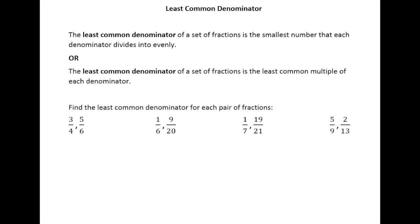Just to give you an idea of why we care about this idea of a least common denominator — when we get to adding and subtracting fractions, we're going to need all of our denominators, all the bottom numbers of our fractions, to be the same. The least common denominator is what we're going to make all of the denominators turn into when adding or subtracting. We'll see exactly how that plays out in the next section. For now, we'll just work on finding the least common denominator for pairs of fractions.